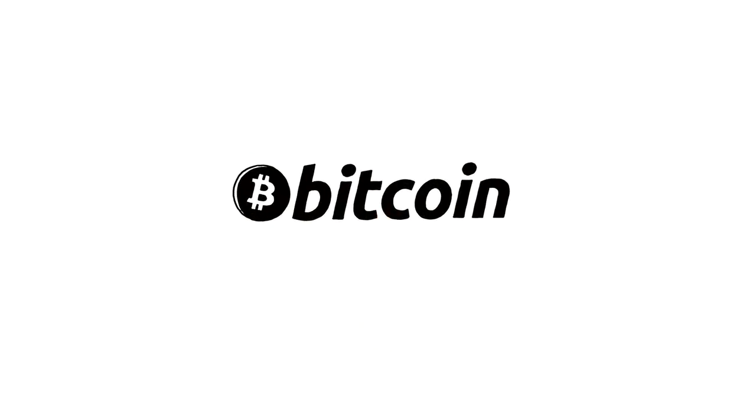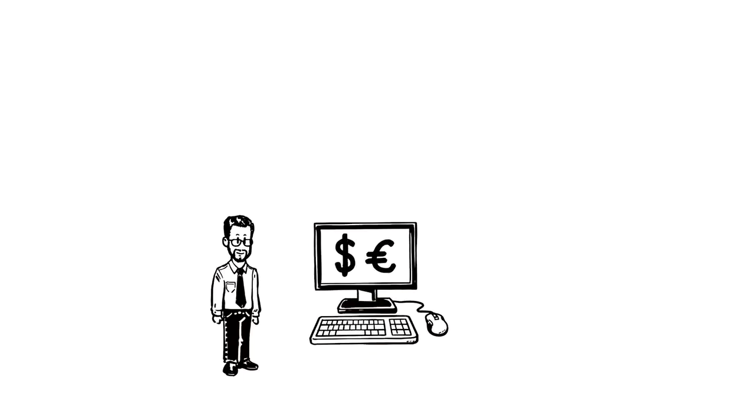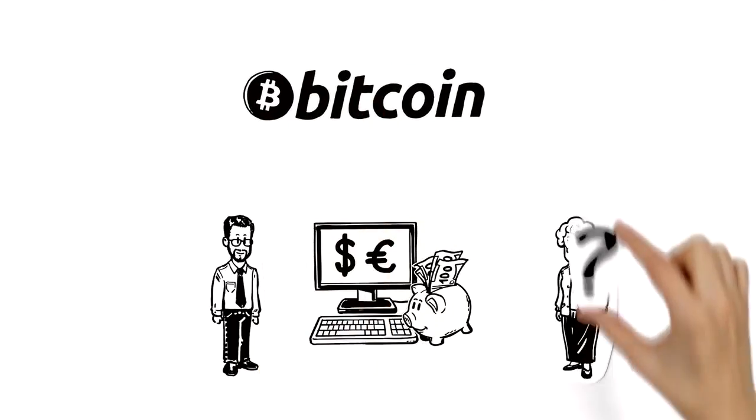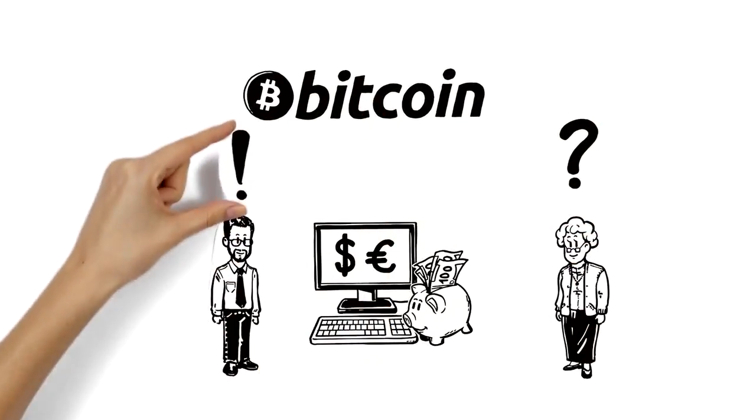Bitcoin. Explain simply. This is Matthew. He works with online payment, and his grandmother, Margaret, has just begun banking online. She's heard of Bitcoin, but doesn't know what it is. Matthew can explain.